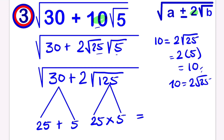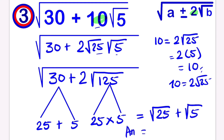To write our answer, we have the square root of 25 plus the square root of 5. The square root of 25 is 5, so our answer is 5 plus root 5. That's it. Please do subscribe — thanks for watching!